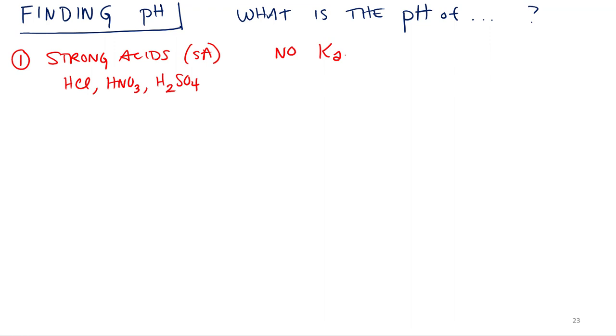And because of that 100% ionization, what can we assume, or what do we know about the hydronium concentration? It's a one-to-one ratio. It's the same. So, your concentration of your strong acid equals your hydronium. And then you just take that in and plug that into your pH equals negative log of the hydronium concentration.